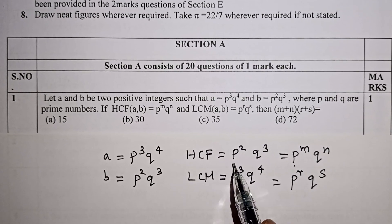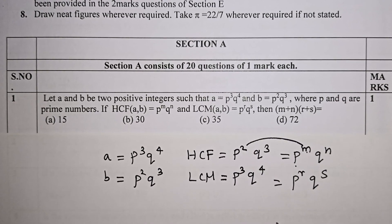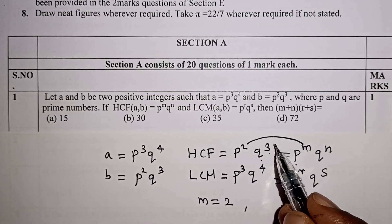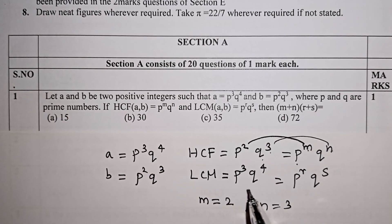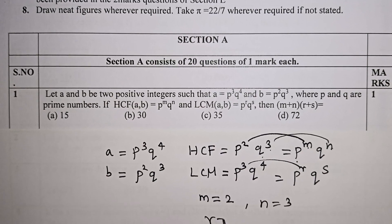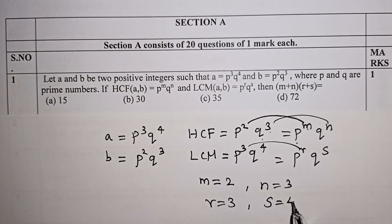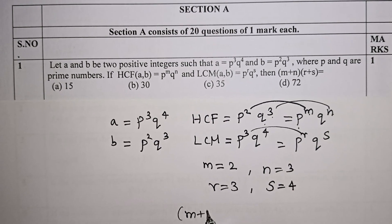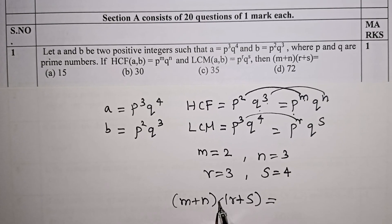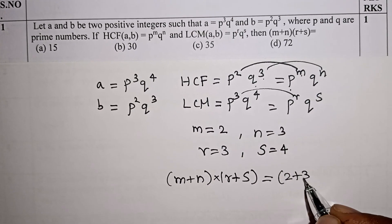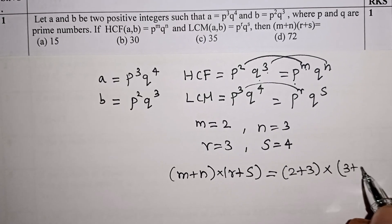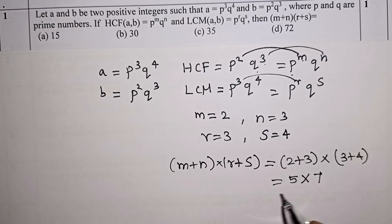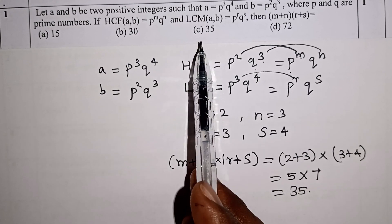If HCF is P^M Q^N and LCM is P^R Q^S, then comparing: P^M = P², so M = 2. Q^N = Q³, so N = 3. P^R = P³, so R = 3. Q^S = Q⁴, so S = 4. The question asks for (M+N)(R+S). M+N = 2+3 = 5. R+S = 3+4 = 7. So 5×7 = 35. The answer is option C, 35.